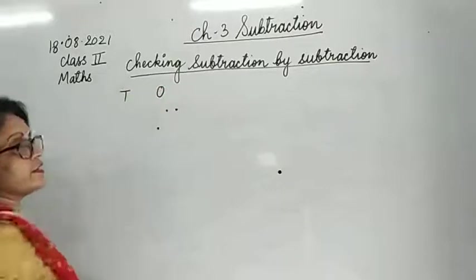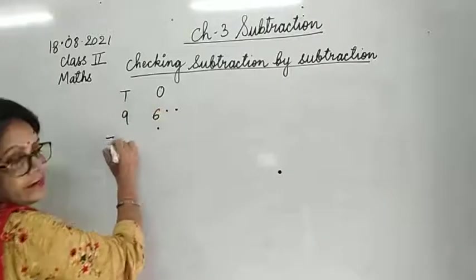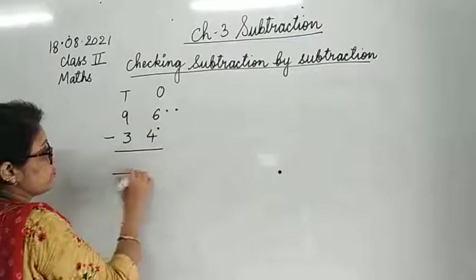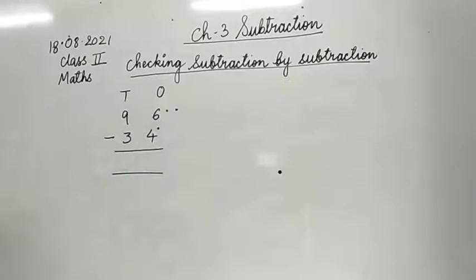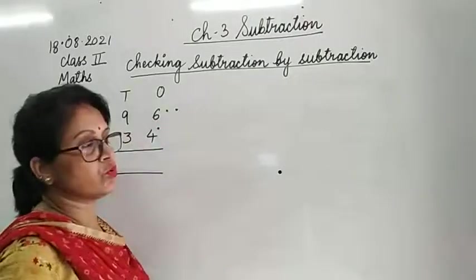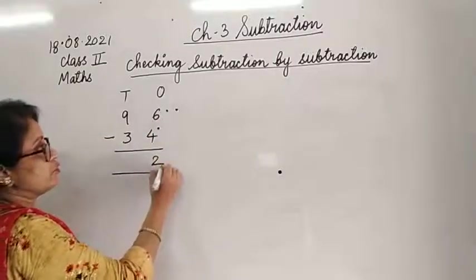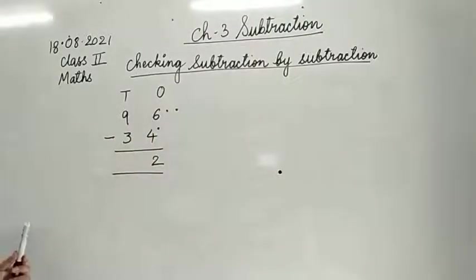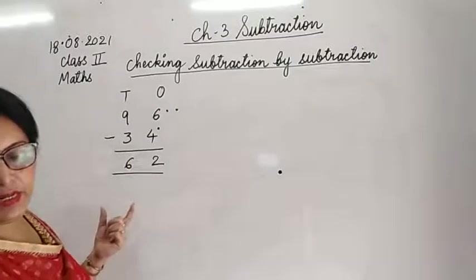The question is 96 minus 34. First let us subtract: 6 minus 4 is 2. Then 9 minus 3 - take away 3, count from 3 onwards: 4, 5, 6, 7, 8, 9 - that is 6. Our answer is 62.